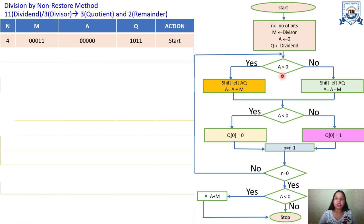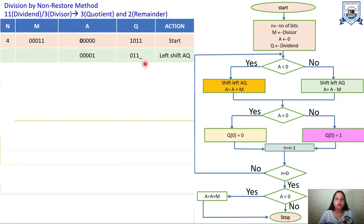Next we check if A is less than 0 or greater than or equal to 0. Since A is currently 0, it is not less than 0, so we move to the branch where we shift left AQ and subtract M from A. We perform the left shift of the AQ register: the bits shift left by one position, the leading zero is omitted, and we have four zeros followed by an unknown last bit.